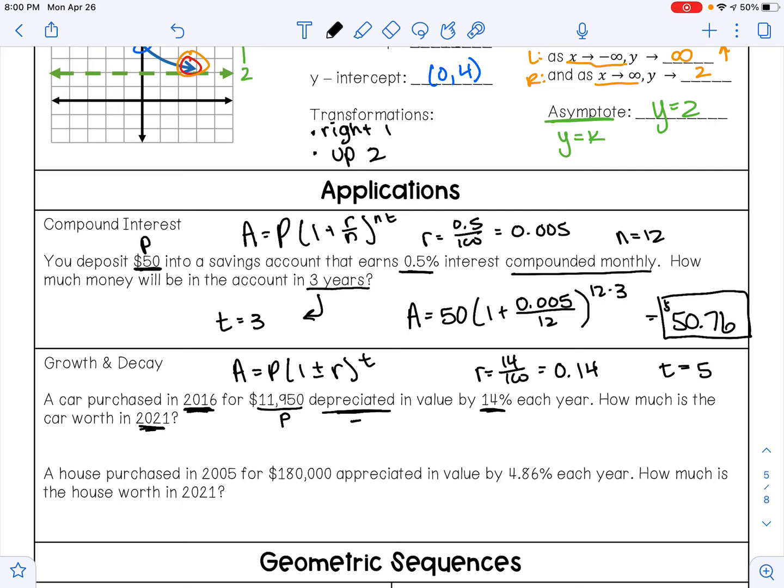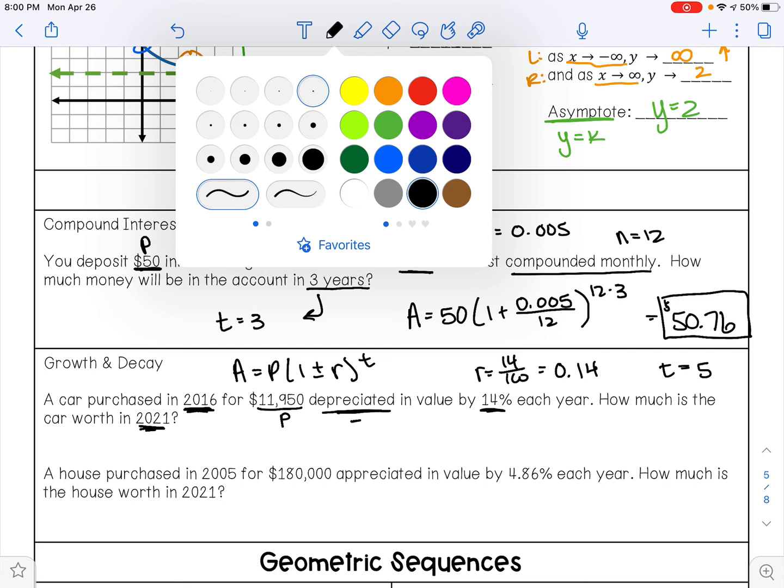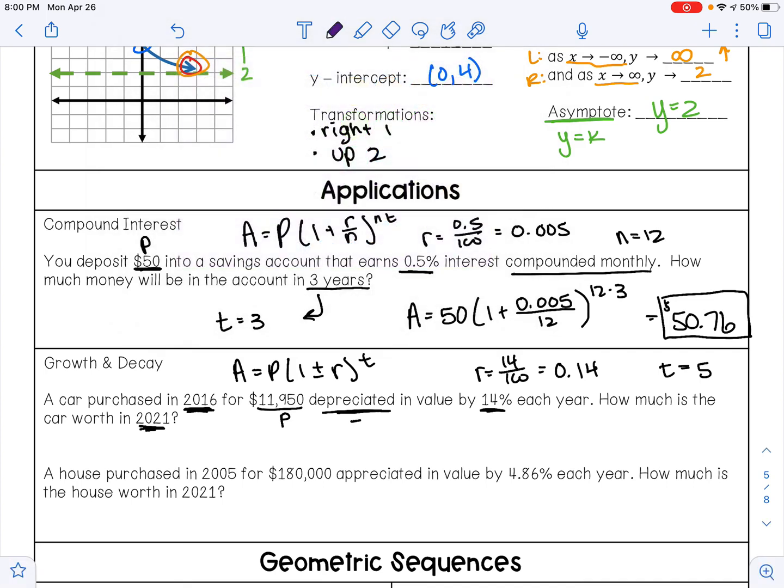So our equation would be A equals 11,950 times (1 minus 0.14) raised to the fifth power.